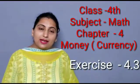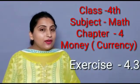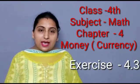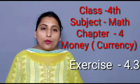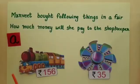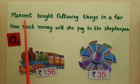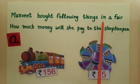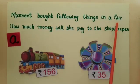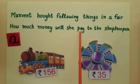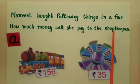Good morning dear students. Today we will solve the first sum of exercise 4.3. Let's start. The first sum is: Manveet bought the following things in a fair. How much money will she pay to the shopkeeper?